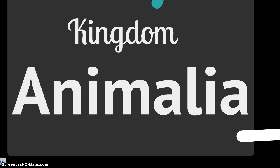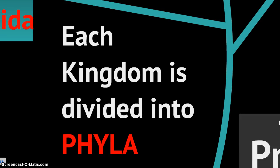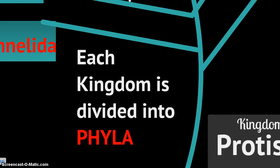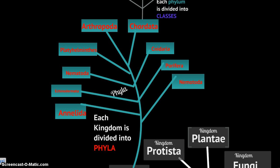Each kingdom is divided into phyla — so the classification goes domain, kingdom, phylum. The animal kingdom is divided into nine primary phyla. These include Annelida, which are segmented worms; Echinodermata, which are starfish and sea urchins; Nematoda, which are roundworms; and Platyhelminthes, which are flatworms.